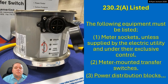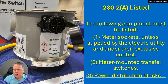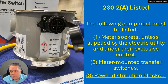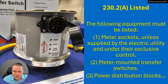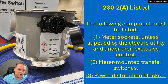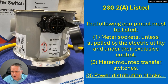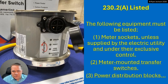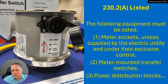230.2 has the listing requirements. All through Article 230, there was a bunch of different things that had listing requirements, and we moved them into the .2 section, which is what we're supposed to do. The stuff that got moved, I'm not going to spend any time on — it was already required, it's still required. The stuff that I think is of interest is what we're going to talk about. Item one: meter sockets have to be listed unless they're supplied by the electric utility and under their exclusive control.